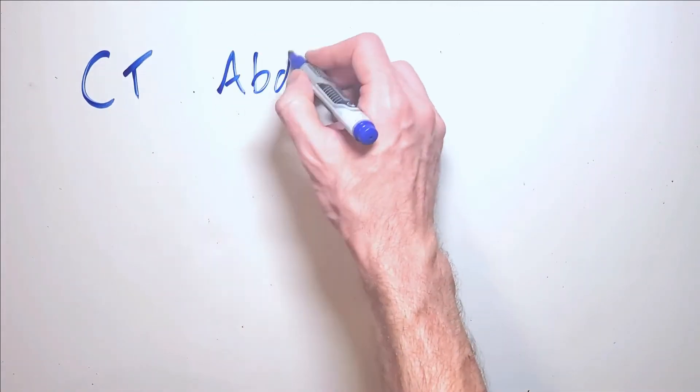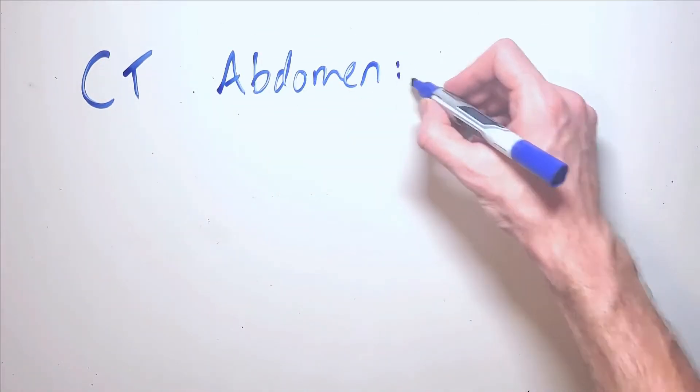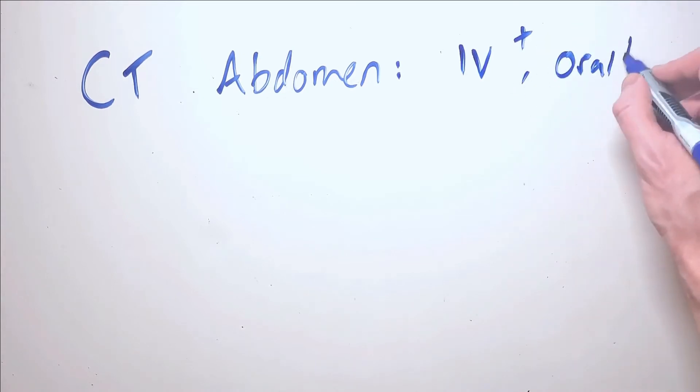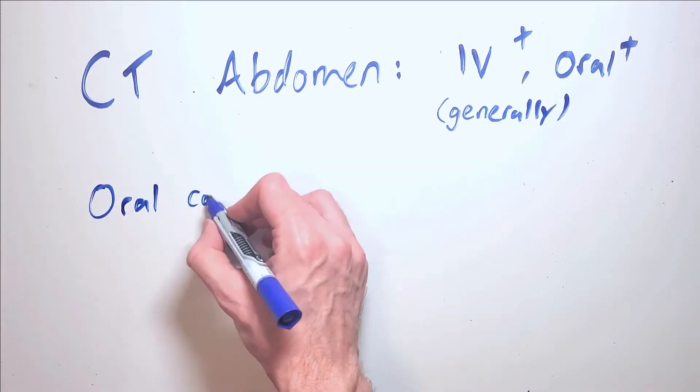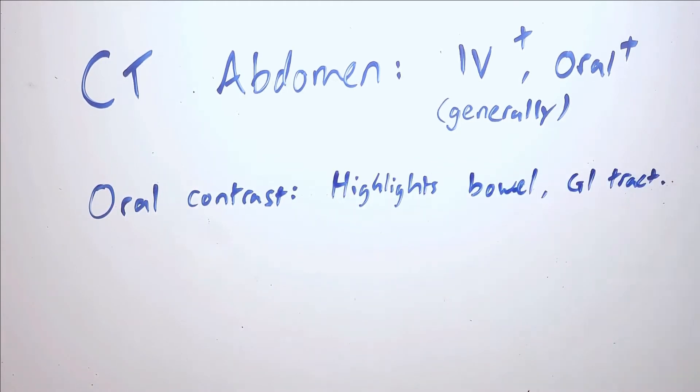Oral contrast is administered often in conjunction with IV contrast to patients undergoing abdominal imaging. Oral contrast allows radiologists to discriminate between contrast filled bowel and surrounding structures within the abdomen, so the whole digestive tract is visualized with contrast on the scan.